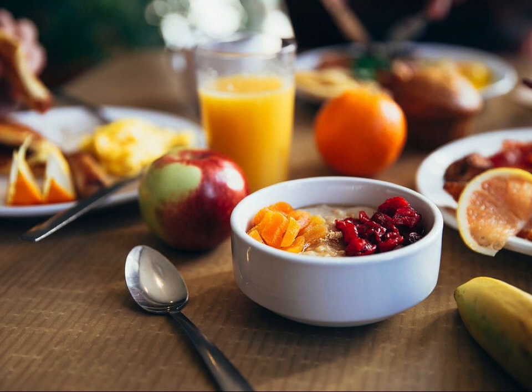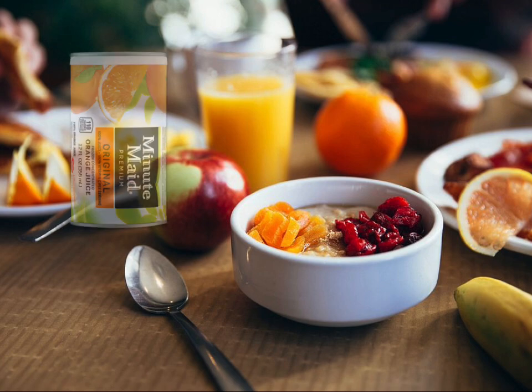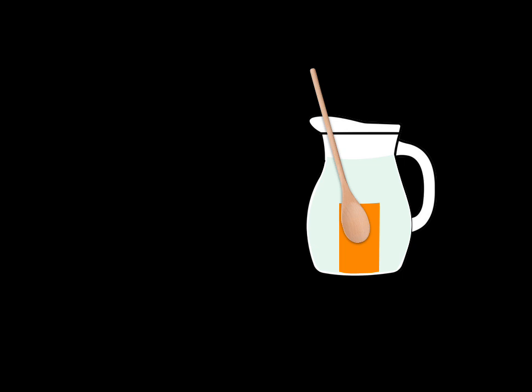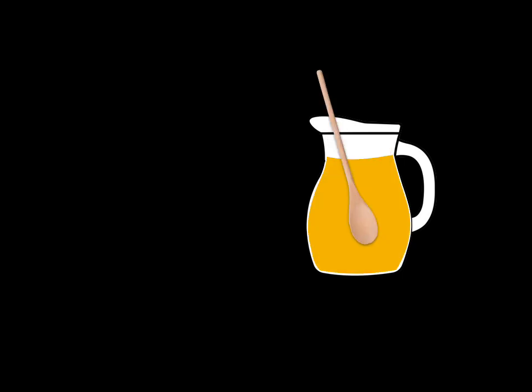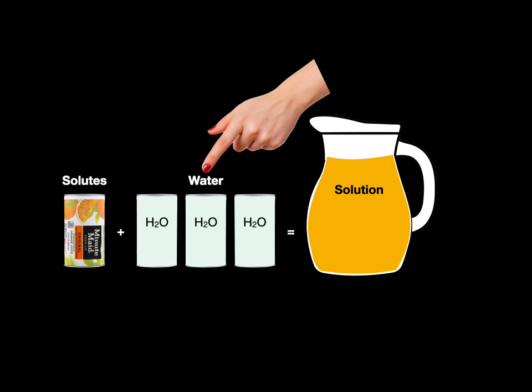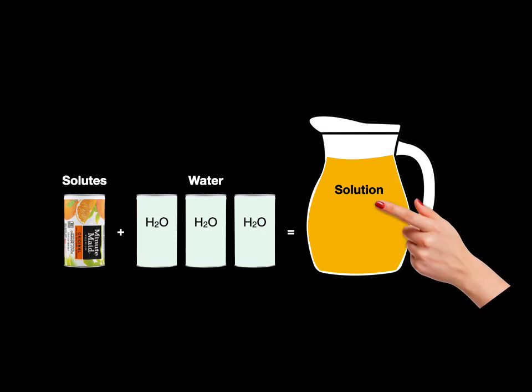When I was a kid, we often had orange juice with breakfast, but it was the concentrated orange juice — that frozen brick that thuds at the bottom, and you add three cups of water and stir it and you get orange juice. So the solutes plus the water give us the orange juice solution.